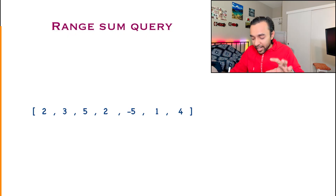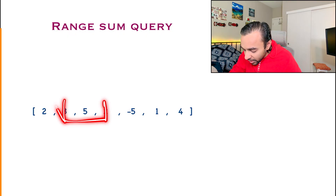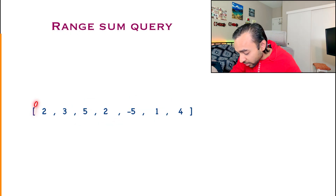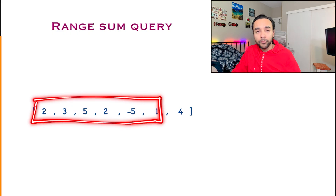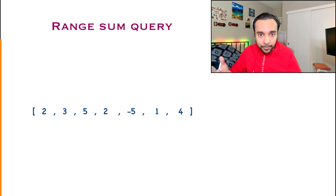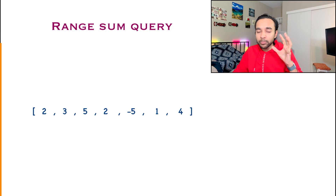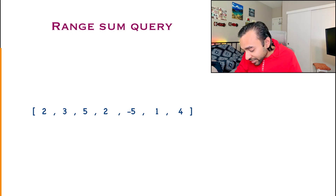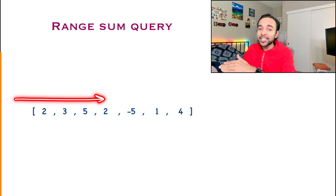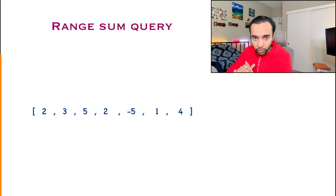With a brute force approach you can iterate over the array again and again. It will give you the correct answer, but it will not be fast. What I want is for you to immediately tell me the sum of this range, then this range, then this range. How do you give all of these answers very quickly? This is where the concept of a prefix sum comes in very handy.